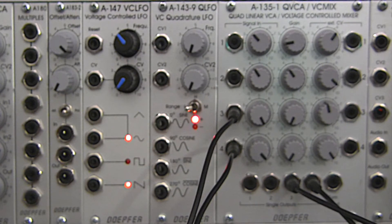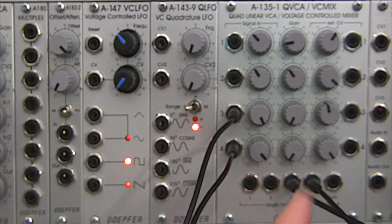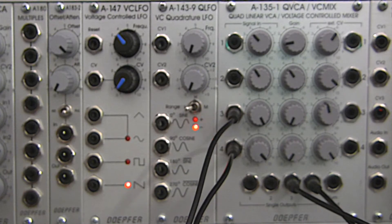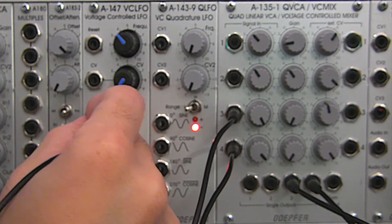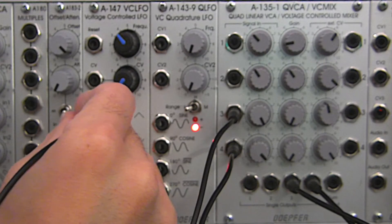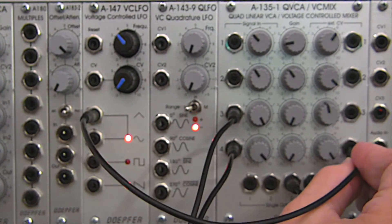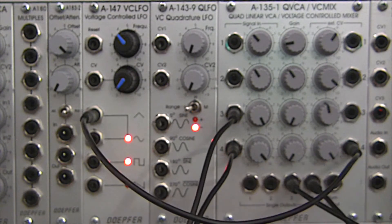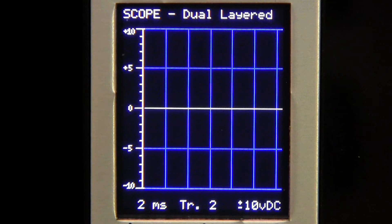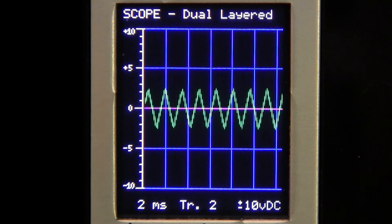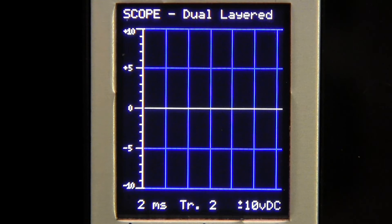Now it's time to get our CV to adjust the levels of these two channels over here. So we're going to be taking a triangle wave from our A147 right here. And we're going to be patching this into the number four CV input right there. And you should see at the oscilloscope, our triangle wave moving up and down, at least amplitude-wise. So the amplitude goes up, and then it goes back down.